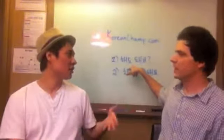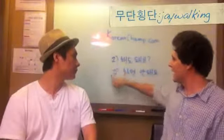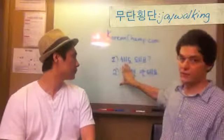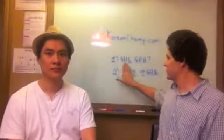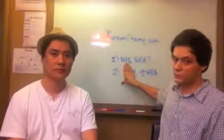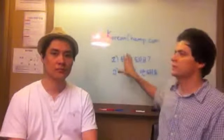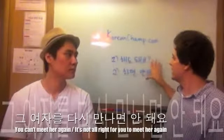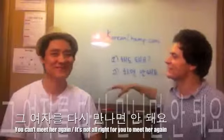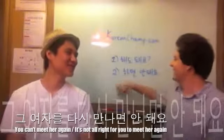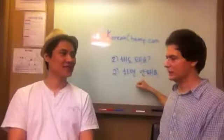무단횡단 같은 거 — 무단횡단 하면 안 돼요. So for example, you can add any verb in front of this. This is just the universal form for 'to do,' but you can add anything. 이거 쓰면 안 돼요 — you can't use that. 그거 하면 안 돼요. 그 사람을 다시 만나면 — 만나면 안 돼요. 남자친구 따로 있어요. 이미 사귀는 사람 있어요. You can't meet her again — she already has a boyfriend.